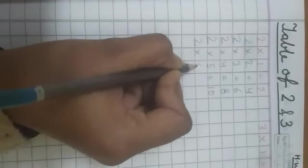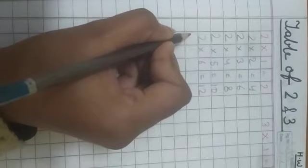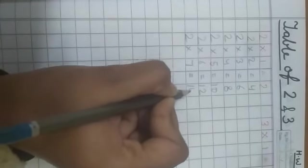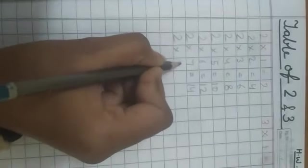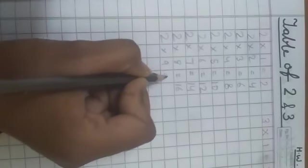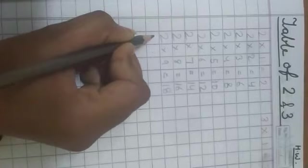2 6's are 12. 2 7's are 14. 2 8's are 16. 2 9's are 18. 2 10's are 20.